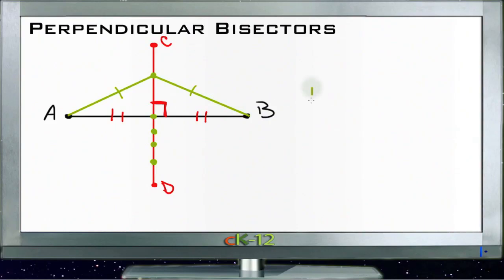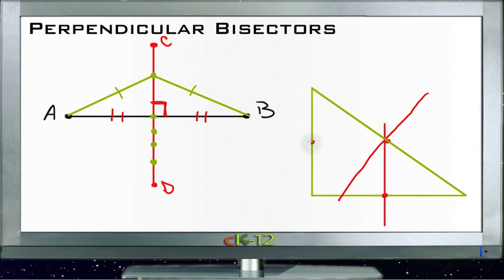And then the last thing we're going to mention with perpendicular bisectors has to do with triangles. And that is, if we take a triangle like so, like this, and we use a perpendicular bisector on all three sides, so we find the center here and we bisect all three sides of the triangle with those perpendicular bisectors.